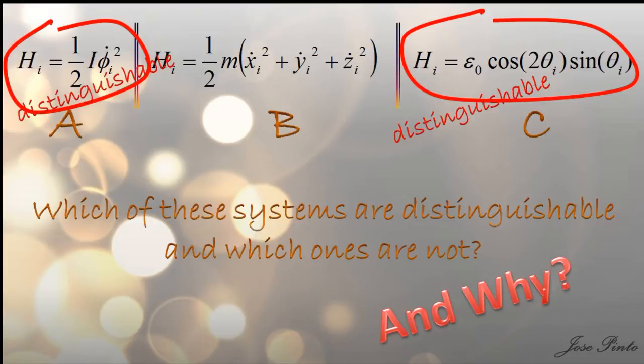A and C are distinguishable. And B is not. And here is the reason why.